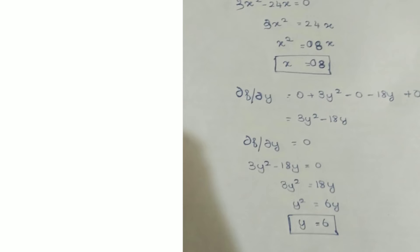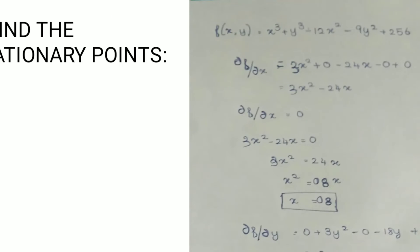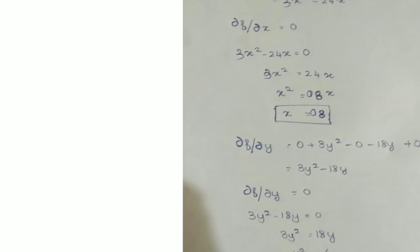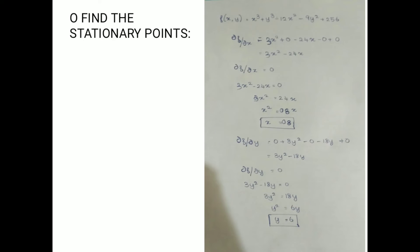Now find ∂f/∂y by differentiating f(x, y) with respect to y. x³ has no y term, so it gives 0. y³ differentiates to 3y². The -9y² term differentiates to -18y, and the rest gives 0. So ∂f/∂y = 3y² - 18y. Setting ∂f/∂y = 0: 3y² = 18y, giving y = 6. So the critical numbers are x = 8, y = 6.